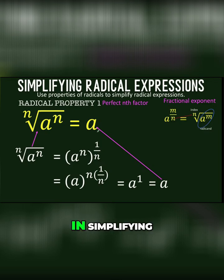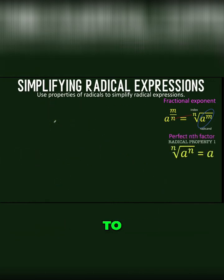This is the property that you are going to use a lot in simplifying radicals. Whenever there is an n-factor, then you can eliminate the radical symbol. So let's remember this property, we are going to use that a lot.